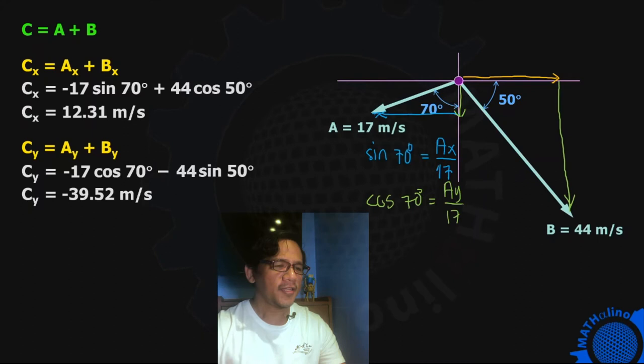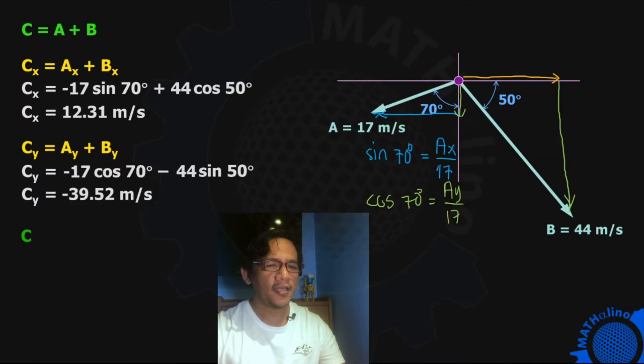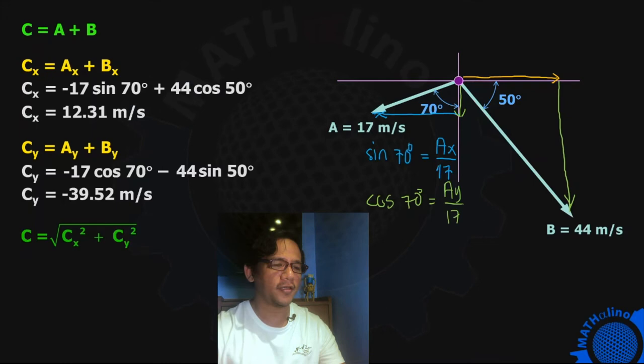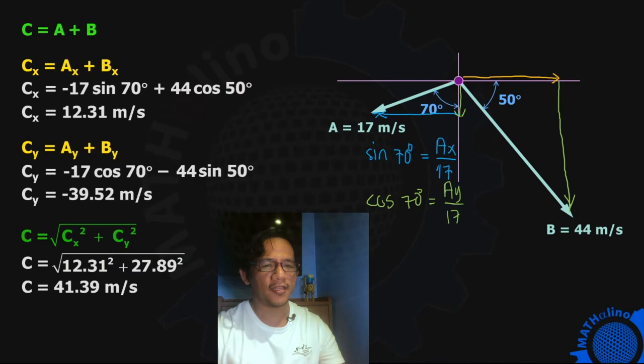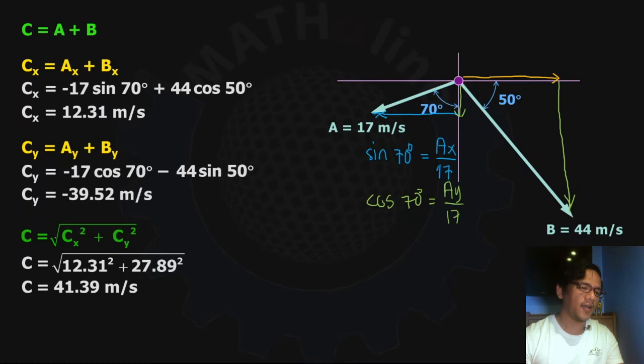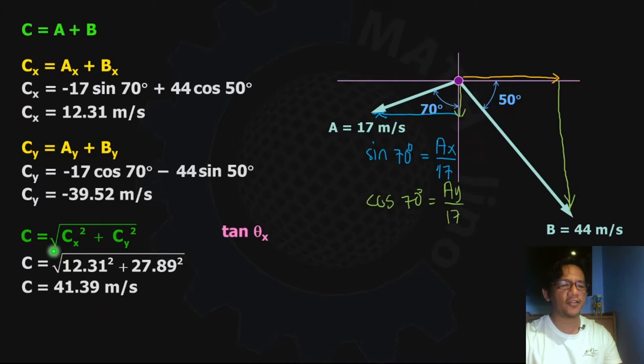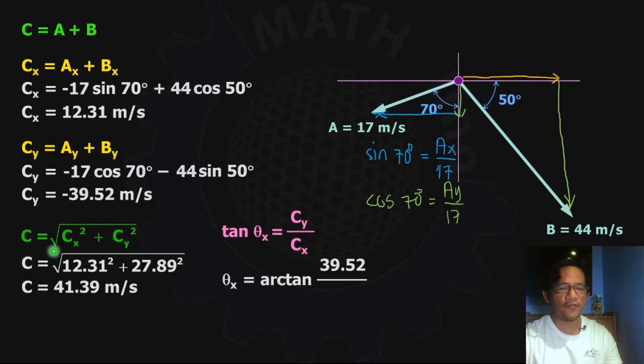To find the resultant, the magnitude of C, we use the Pythagorean theorem: the square root of CX squared plus CY squared. Substituting those values, we have the magnitude of the resultant. We are not yet complete because we need to define the direction of vector C. The direction is given by tangent of theta X equal to CY over CX. Substituting, we get the direction from the horizontal: 72.7 degrees.